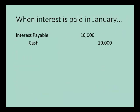Then, when the interest is paid in January, we'll debit interest payable to remove the liability from the books, and credit cash for the amount of interest paid.